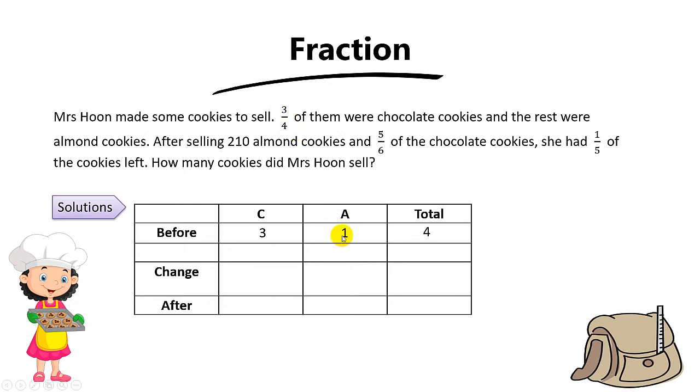Now the question says she's going to sell five-sixths of the chocolate cookies. Out of 6 units of chocolate cookies, she's going to sell 5 of them. To do this, we can multiply by 2 to make the ratio 6 to 2 to 8. Why do we do that? Because we want to make the starting cookies 6 units, since she's going to sell five-sixths of the chocolate cookies.